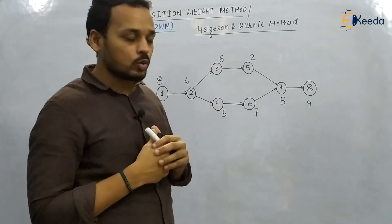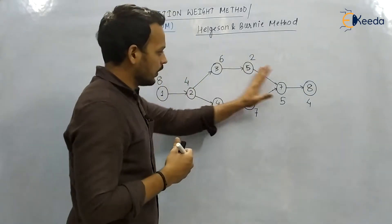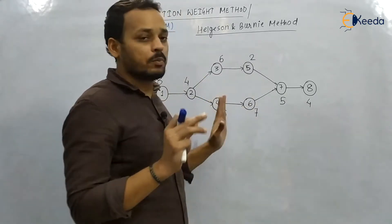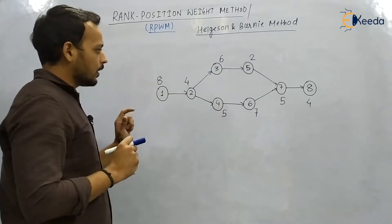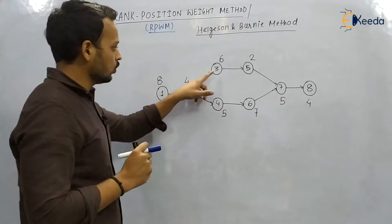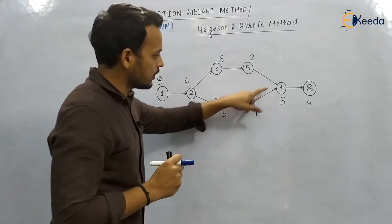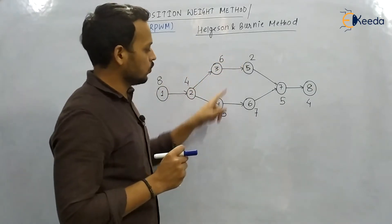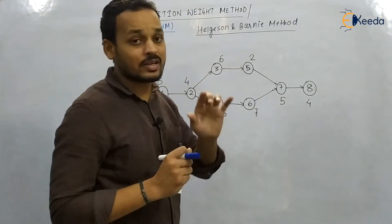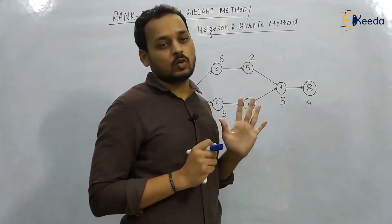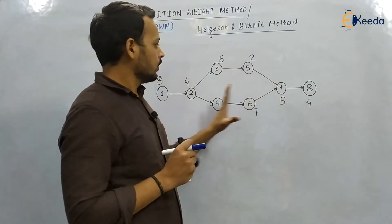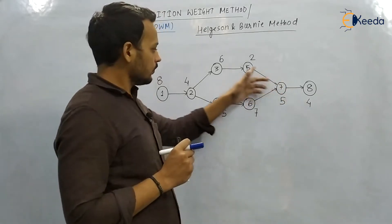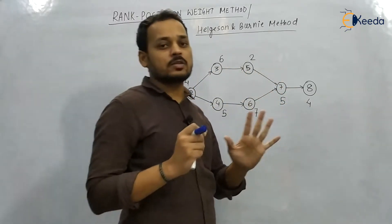We have taken a random network diagram as an example. It consists of 8 work elements: 1, 2, 3, 4, 5, 6, 7, and 8. The numbers 8, 4, 6, 2, 5, 7, 5, and 4 represent their corresponding activity completion times. So this network diagram has 8 work elements with their activity completion times given.